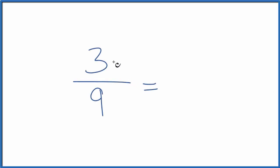Let's write equivalent fractions for 3/9, so 3 over 9, and what we're trying to do is find a fraction that has the same value but a different numerator and denominator.